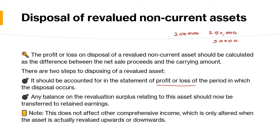There are two steps to disposing of a revalued asset. First, it should be accounted for in the statement of profit and loss of the period in which the disposal occurs. Second, if there is any balance on the revaluation surplus related to this asset, that would also be transferred to retained earnings. For example, if you have a $20,000 balance in revaluation surplus, that also transfers, making the total transfer $50,000 plus $20,000 equals $70,000.